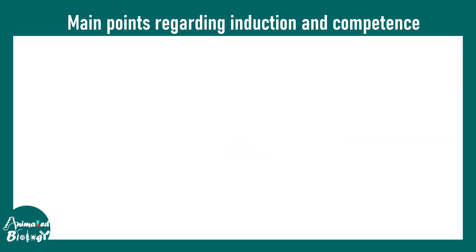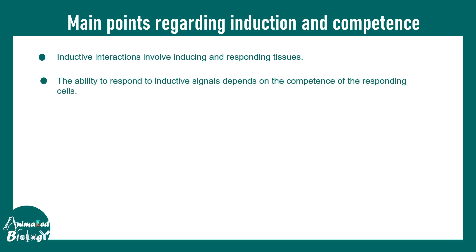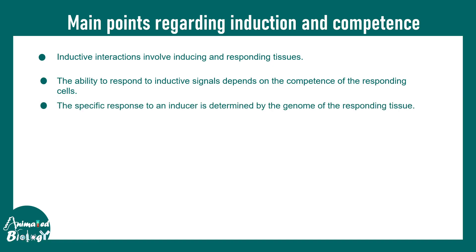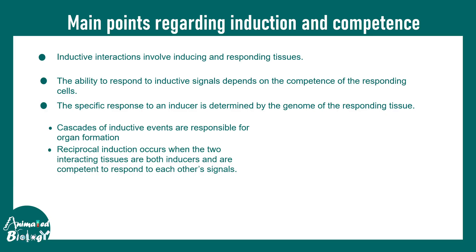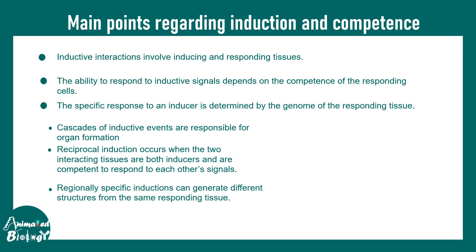To summarize: inductive interactions involve an inducing tissue and a responding tissue. The ability to respond to an inductive signal is known as competence. The specific response is determined by the genome of the responding tissue, involving changes in gene expression. Cascades of inductive events are responsible for organ formation. Reciprocal induction describes two-way crosstalks, and regionally specific induction cues can generate different structures from the same responding tissue.